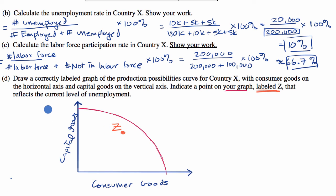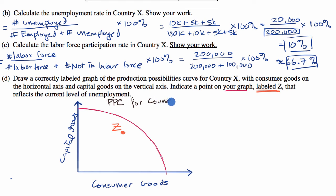Since they're asking us to show our work, and if this is graded on an AP test, you would get points for doing things properly. It's always good to put a title too — so you could write 'Production Possibilities Curve for Country X.' And we're done.